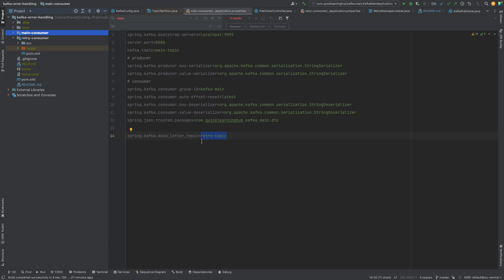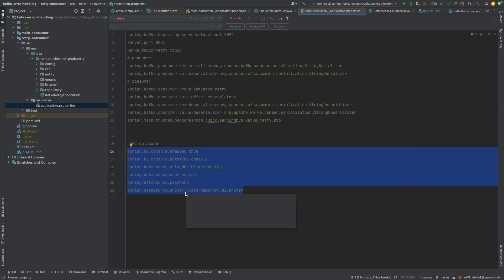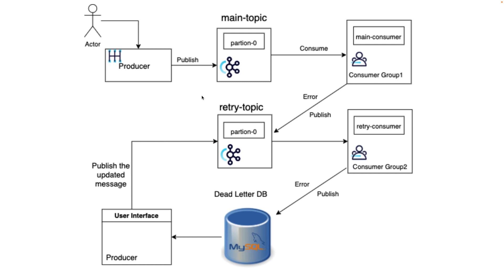Now for the retry consumer, which is listening from the retry topic. From the configuration perspective, we're saying: listen to this retry topic. This retry consumer is running locally on port 8081, with the same string serializer and deserializers. The interesting part is the database config — as per the diagram, if the retry consumer after certain retries is still unable to process that record, it will publish it to the database. For quick reference we're using an H2 in-memory database.